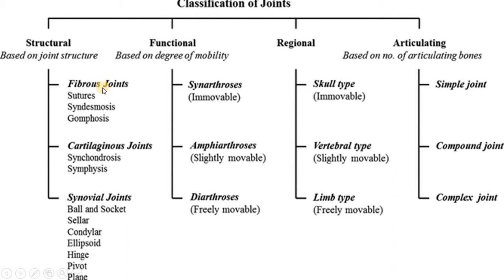Fibrous joints have three sub-types: suture, syndesmosis, and gomphosis. Cartilaginous joints include synchondrosis and symphysis. Synovial joints include ball and socket, saddle, condylar, ellipsoid, hinge, pivot, and plane joints.